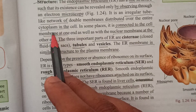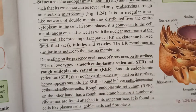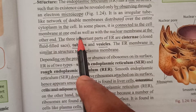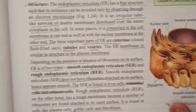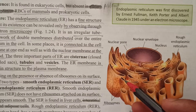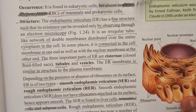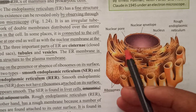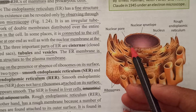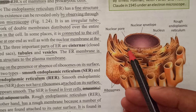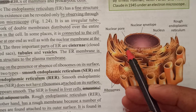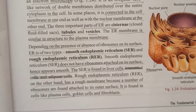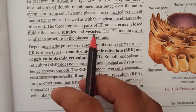The endoplasmic reticulum is distributed over the whole cytoplasm in the cell. At some places it connects to the cell membrane at one end as well as to the nuclear membrane at the other end.